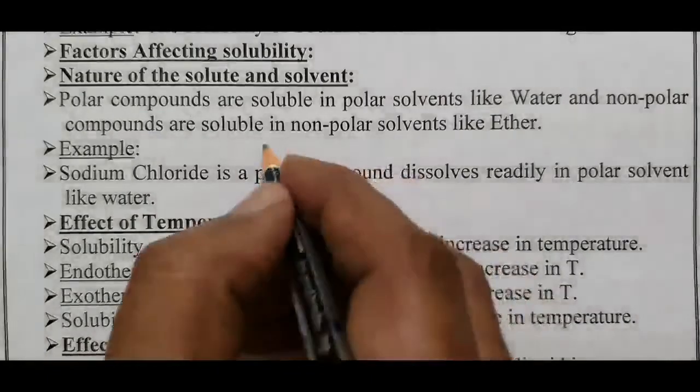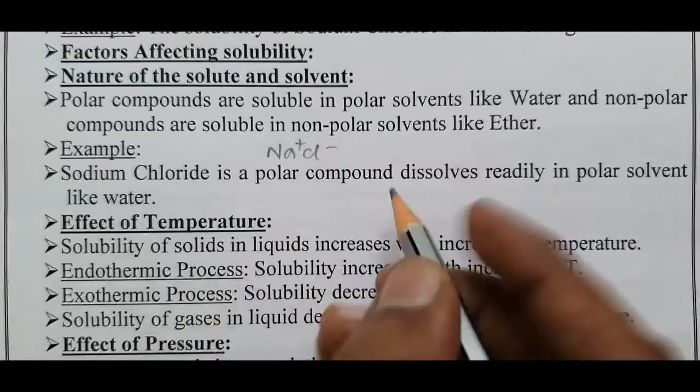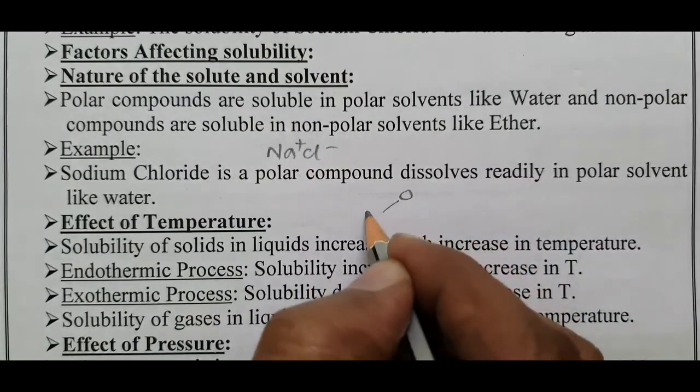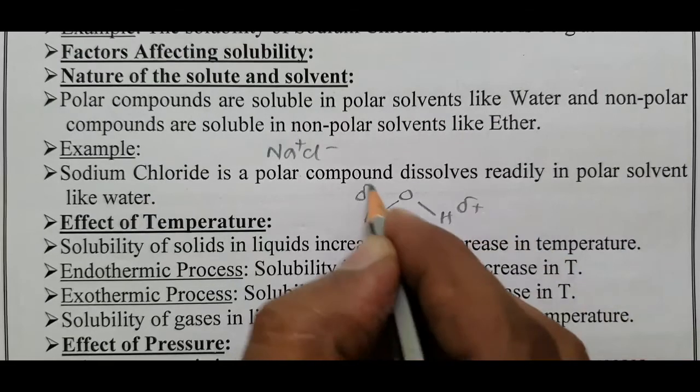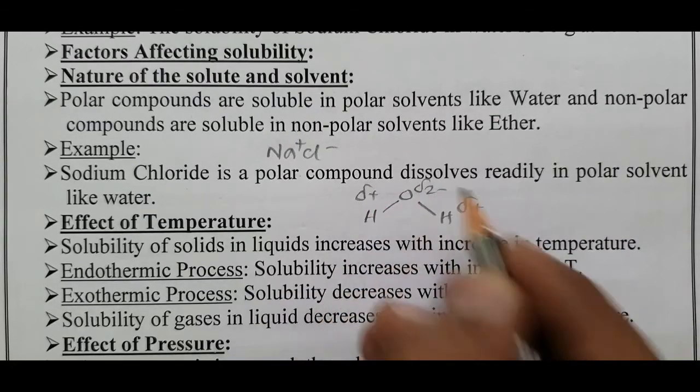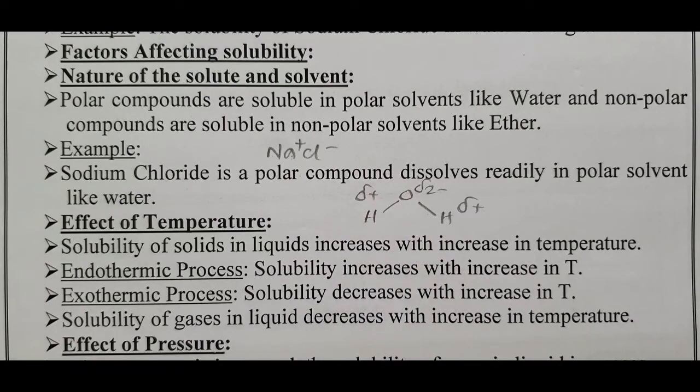Sodium chloride Na+ Cl- is dissolved in water. Hydrogen is less electronegative element, delta plus. Oxygen is more electronegative element, delta 2 minus. A polar compound is soluble in the polar solvent.